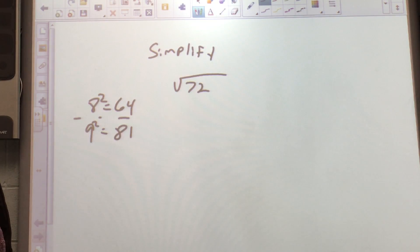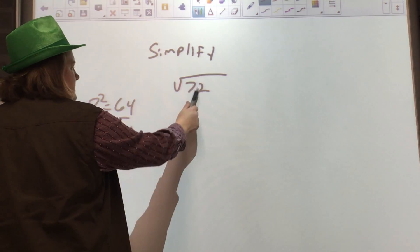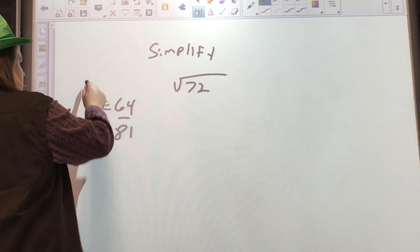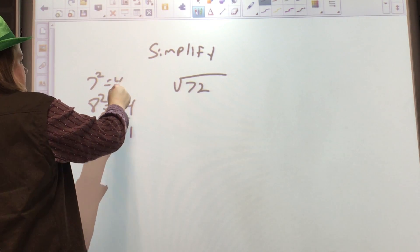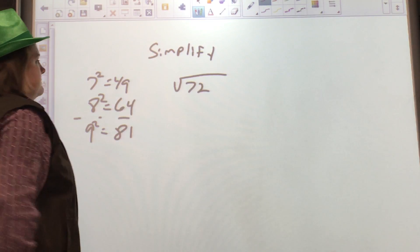so it's not a perfect square. Now I'm going to look for the biggest perfect square that will go evenly into 72. Well, 64 times a whole number doesn't make 72, so let's work backwards. 7 squared is 49, that times a whole number doesn't make 72.